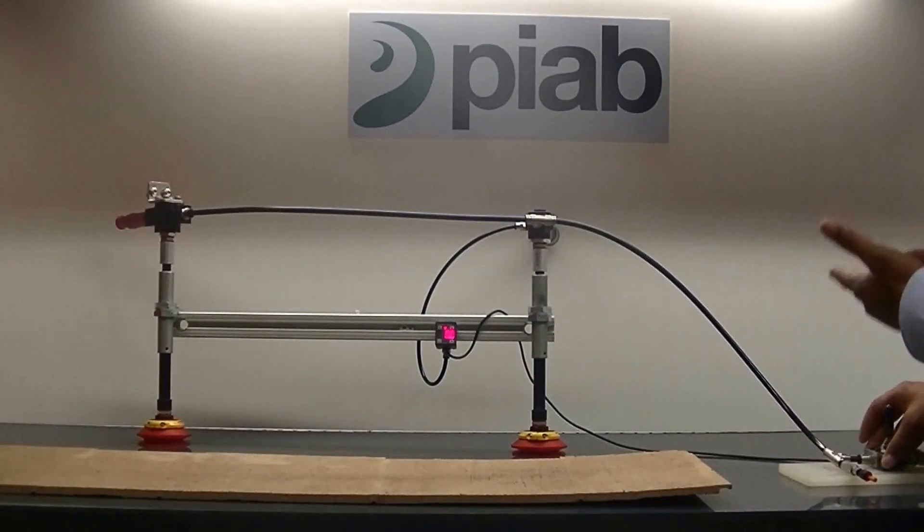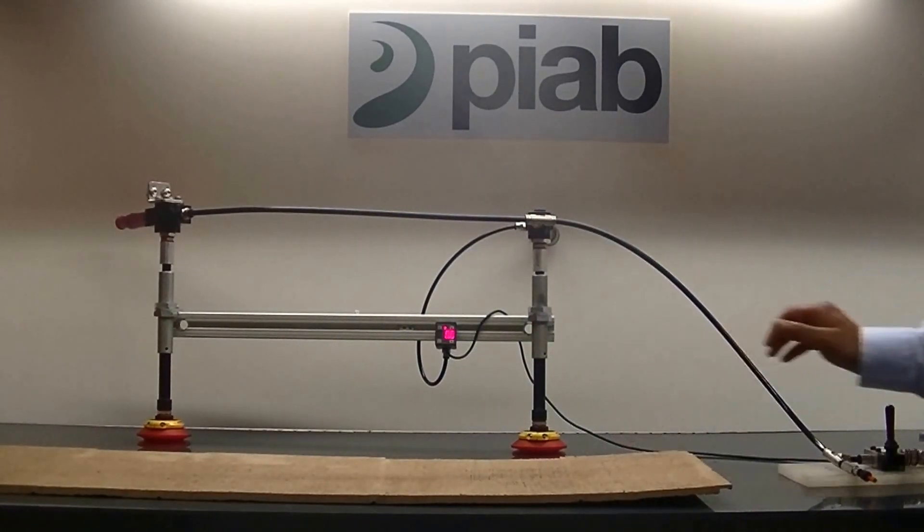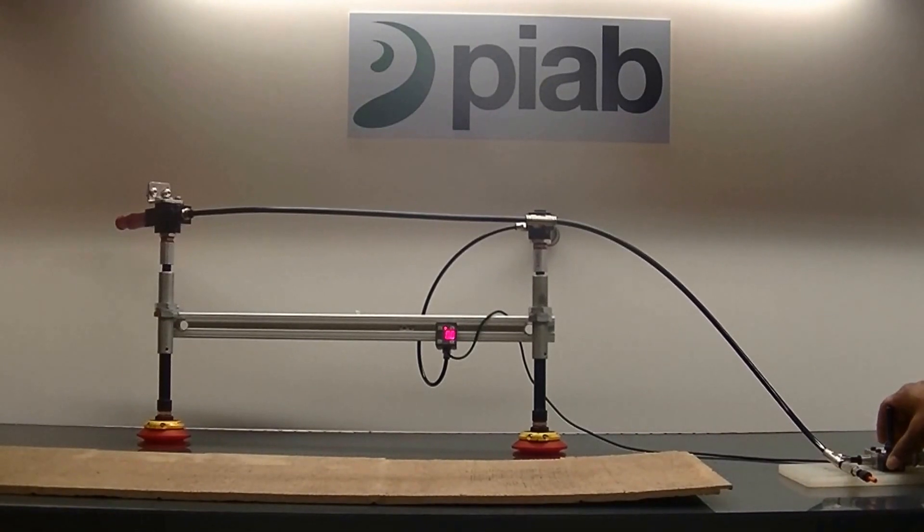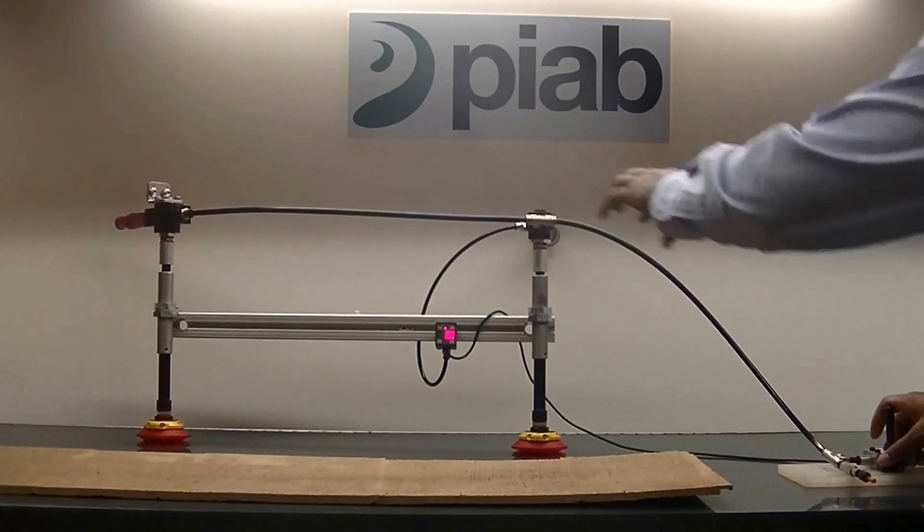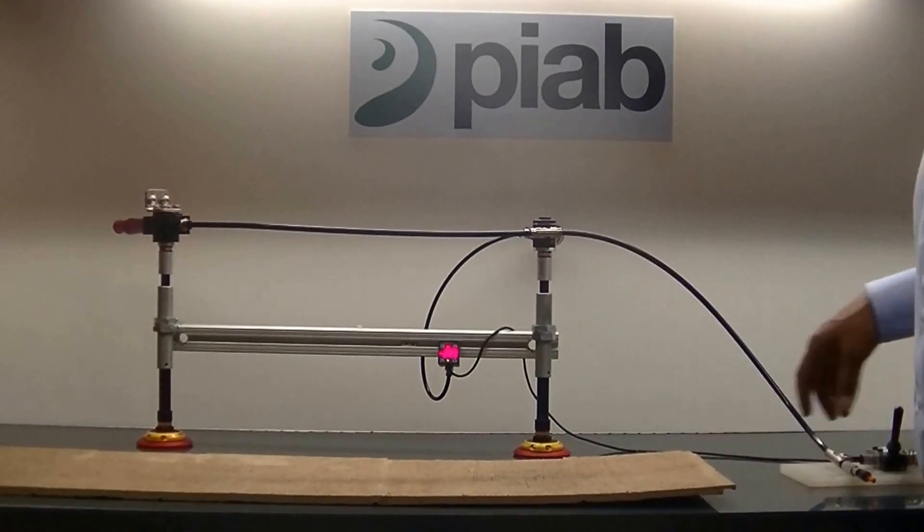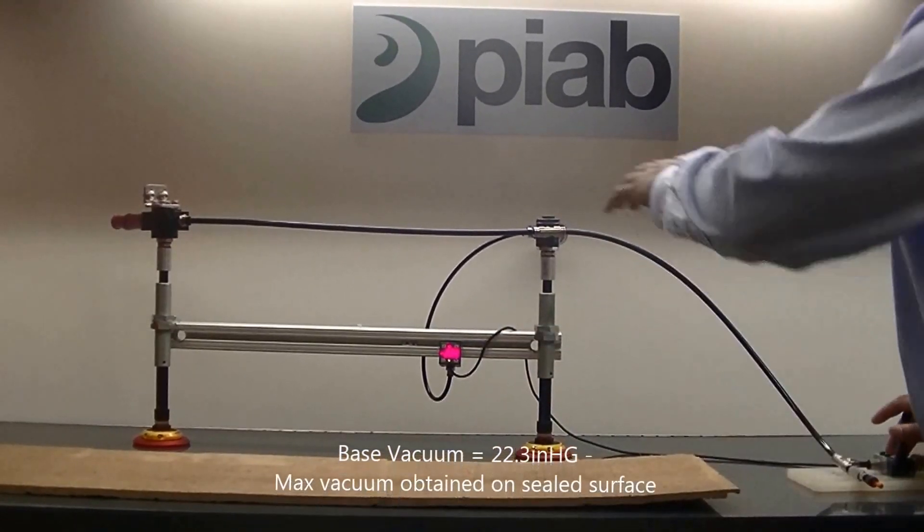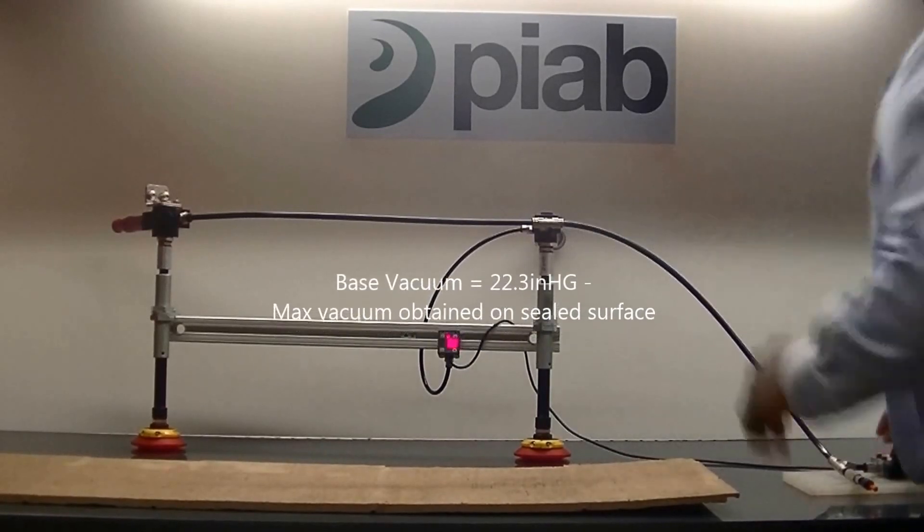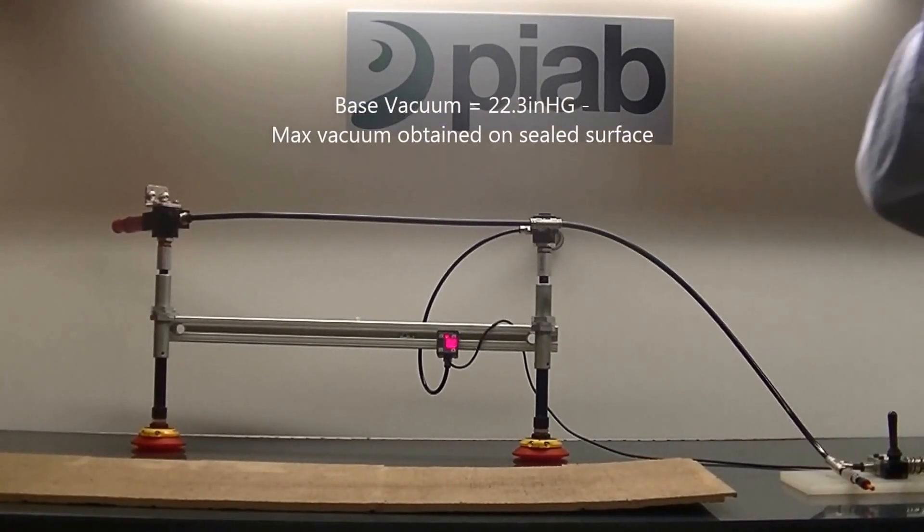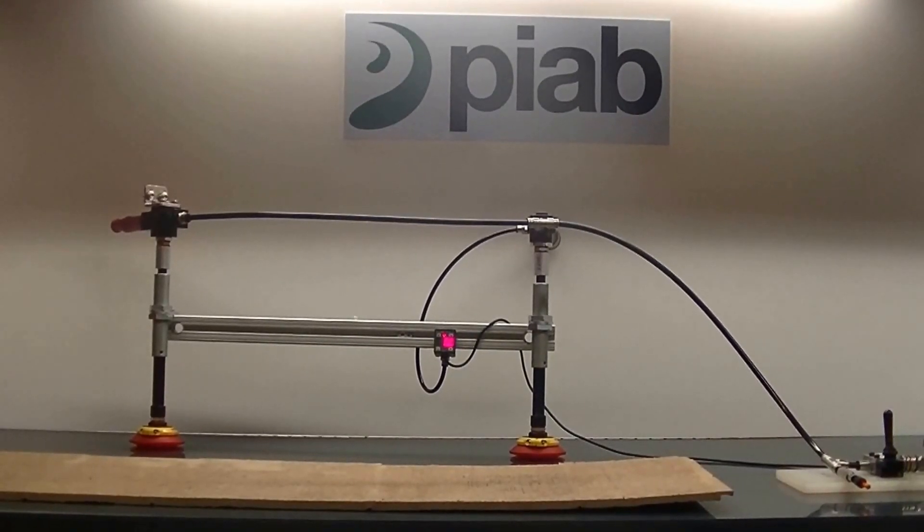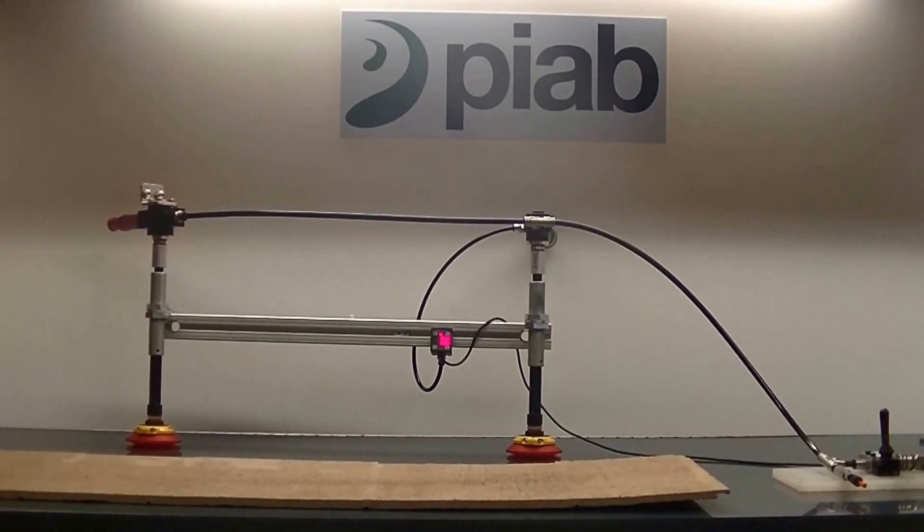Just so you can get an idea, our maximum vacuum level when we're pulling on the table should be about 22 inches of mercury. So I'll turn the system on so you can see what that is. While pulling on a totally sealed surface, we're reaching about 22.3 inches of mercury at a feed pressure of about 87 psi.